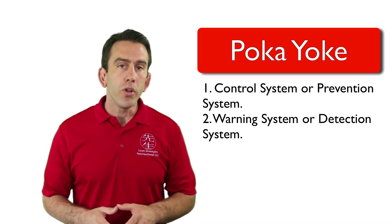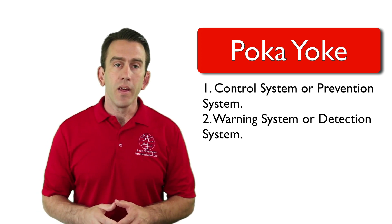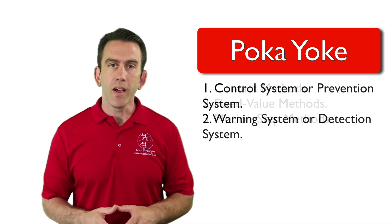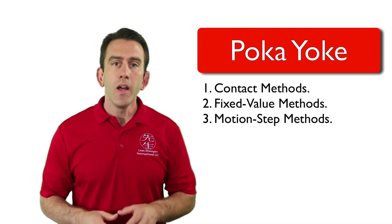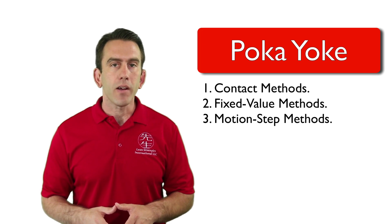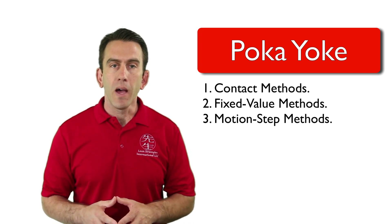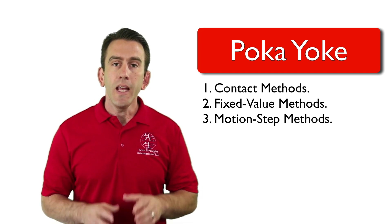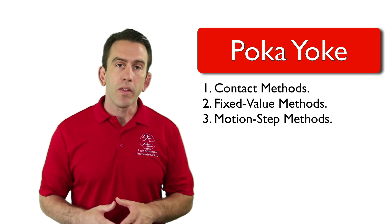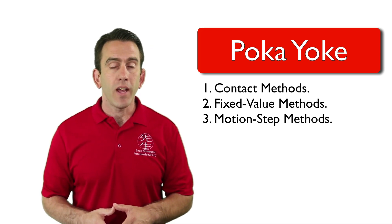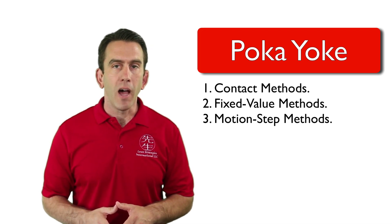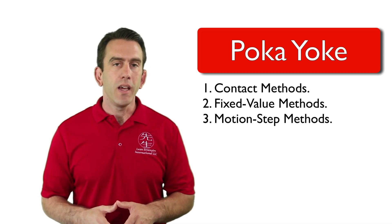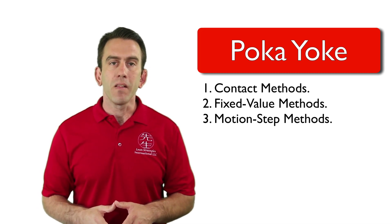Poka-Yoke also uses three different methods to facilitate the control or warning of an error. Those three methods are contact methods, fixed value methods, and motion step methods. Each of these methods is very effective in detecting abnormalities. We will look at each of the methods individually in upcoming lectures.